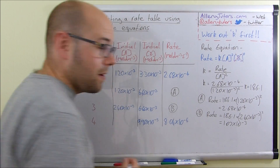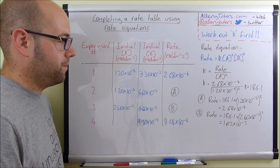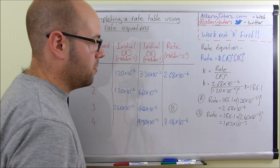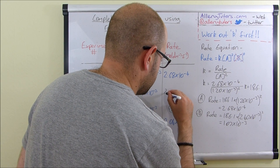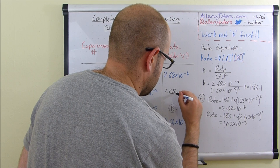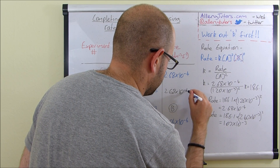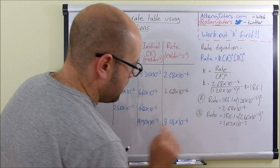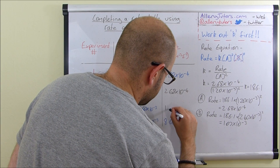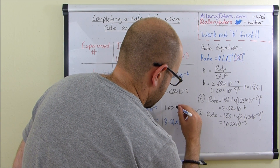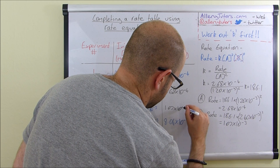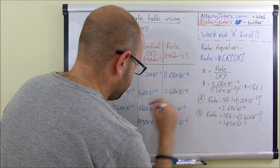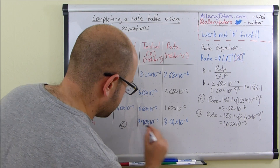So writing those in: blank 'a' is 2.68 × 10⁻⁴ and blank 'b' is 1.07 × 10⁻³.